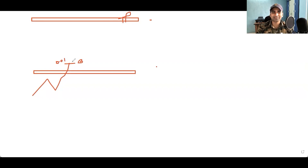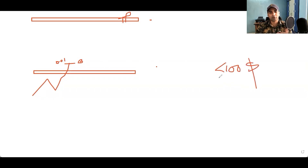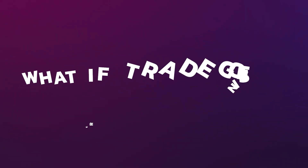You will take a 0.01 lot trade, because I know from my polling and experience that 90% of you have a small account size — in fact less than $100. So please don't overtrade. Take a 0.01 lot trade and wait for the price to go in your direction. You're not going to micro-manage the trade; you're going to hold it.